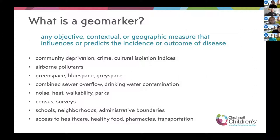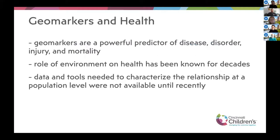Other things I've worked with specifically are access to health care and healthy food. We know that geomarkers are powerful predictors of disease, disorders, injury, and mortality. The environment plays a role on health, but the data and tools needed to characterize this at the population level haven't been available until recently.